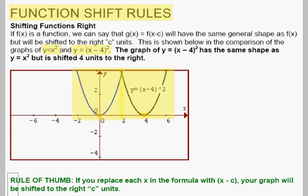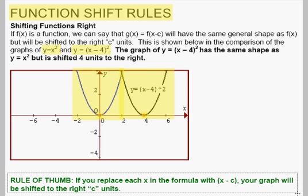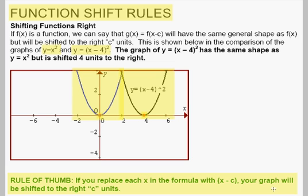The rule of thumb here is: if you replace each x in the formula of a function with x minus some number, you're going to shift the graph to the right by c units. So in this case, we replaced x with x minus 4, and the result was shifting the graph right 4 units.